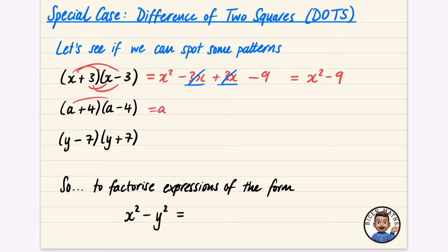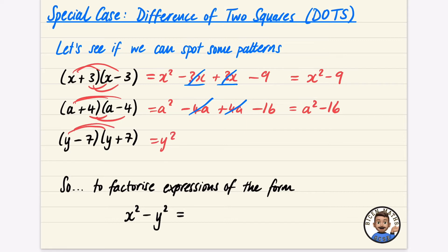Going a little quicker: expanding gives a squared minus 4a plus 4a, then minus 16. The minus 4a and plus 4a cancel out, leaving a squared minus 16. Similarly, y times y is y squared, y times 7 is 7y, minus 7 times y is minus 7y, and those cancel, leaving y squared minus 49.